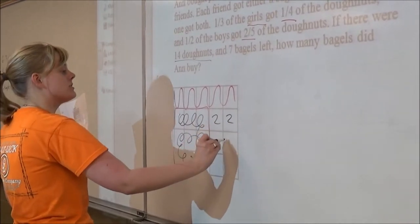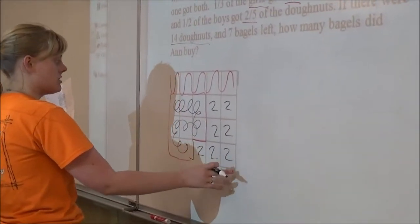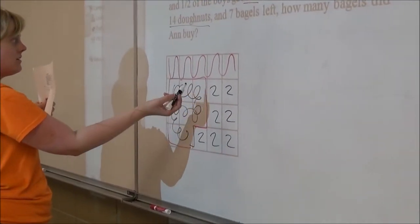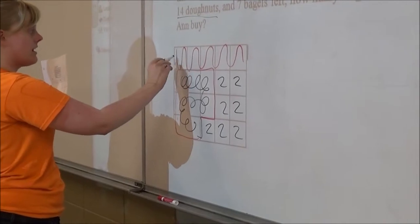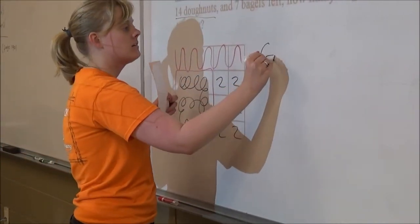each box represents 2 doughnuts. If each of these boxes represents 2 doughnuts, all of these represent 2 doughnuts. So now we know that the girls had 2, 4, 6, 8, 10 doughnuts,